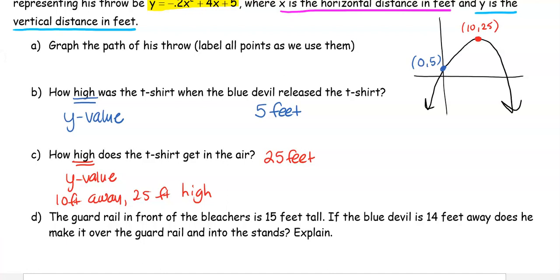Part D: The guard rail in front of the bleachers is 15 feet tall. If you're at the football game, the Blue Devil's on the ground, and there's that big guard rail in front of the bleachers. If the Blue Devil is 14 feet away, does he make it over the guard rail into the stands?